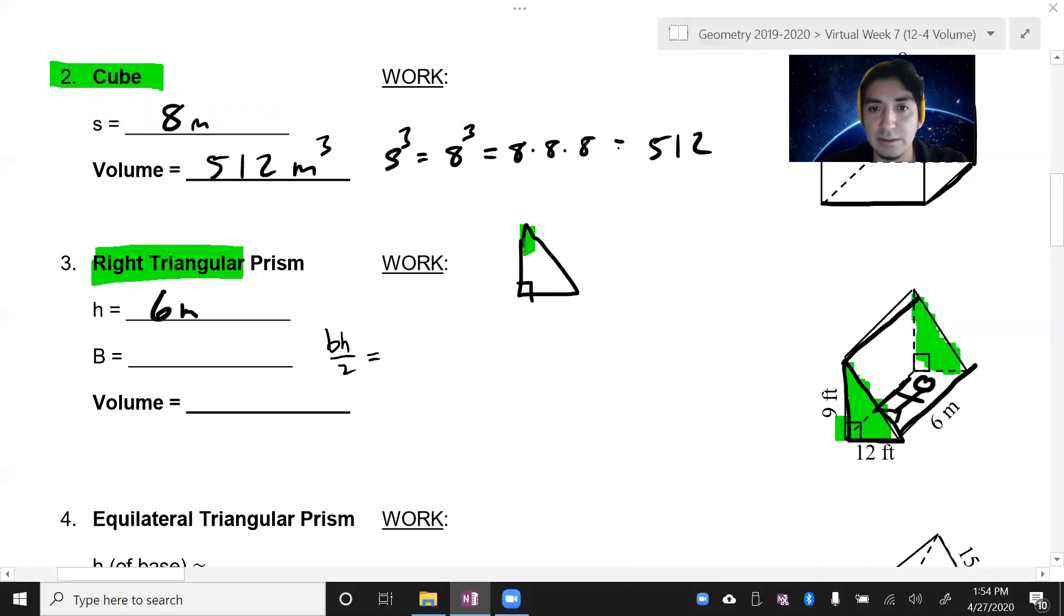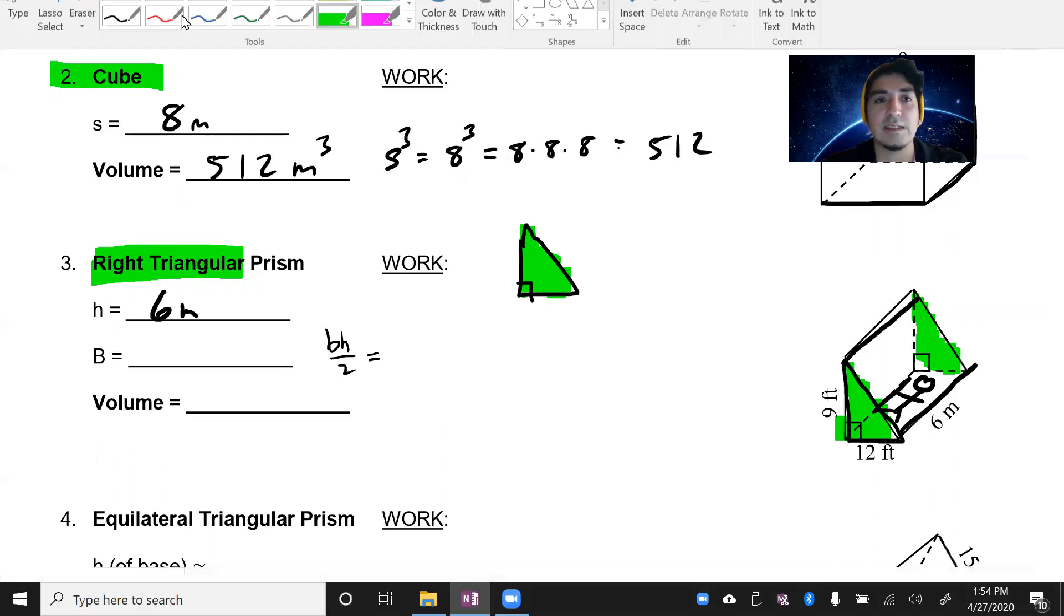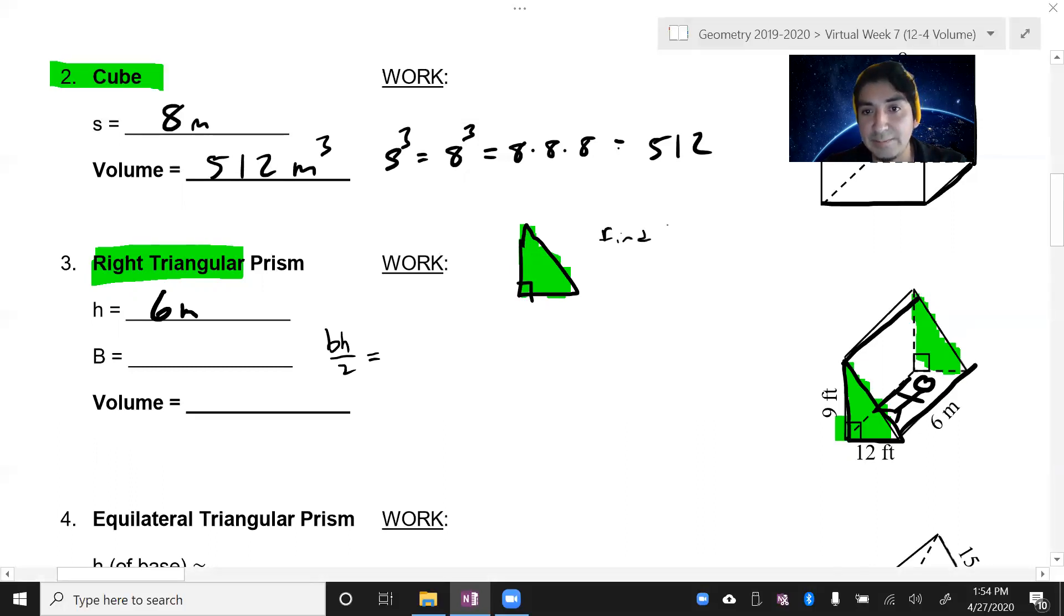My base is going to be base times height divided by two. So that means I'm focused, I'm zoning in on this green triangle. I've got to look for this area, find the area. So that's going to be 12, that'll be 9. So I have 12 times 9 divided by 2. 12 times 9 divided by 2 is 54. So 54 meters squared.